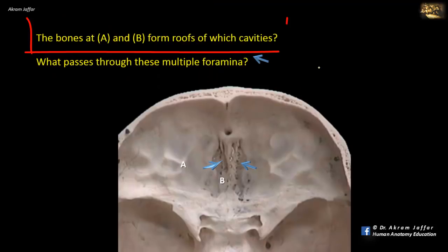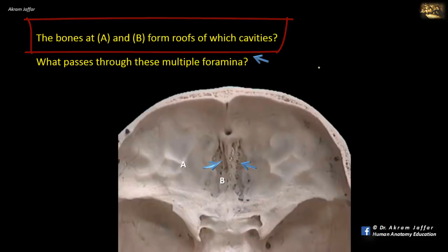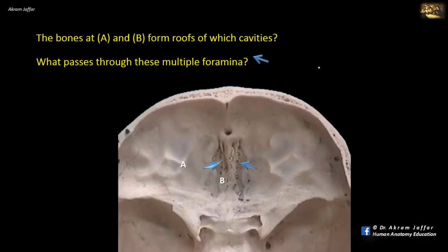The bones at A and B form roofs of which cavities? This is a view of the cranial cavity showing mainly the anterior cranial fossa. A is the orbital plate of the frontal bone, and it forms the roof for the orbit. B is the cribriform plate of the ethmoid bone, and it forms the roof of the nose.